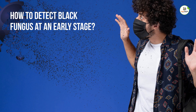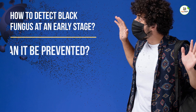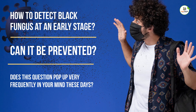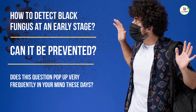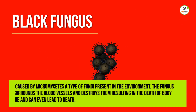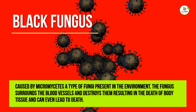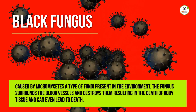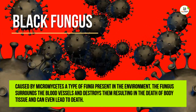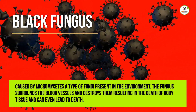How to detect black fungus at an early stage? Can it be prevented? Black fungus is caused by micromycetes, a type of fungi present in the environment. The fungus surrounds the blood vessels and destroys them, resulting in the death of body tissue, and can even lead to death.